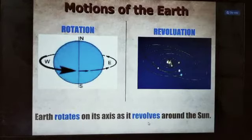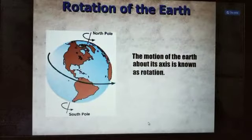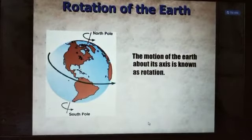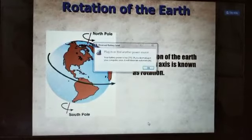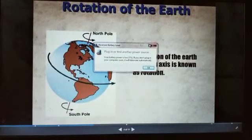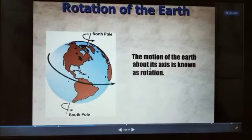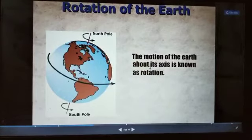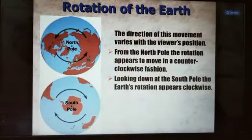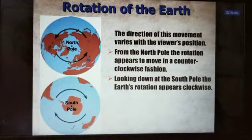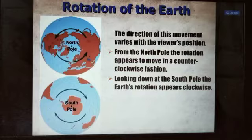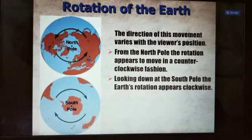Now let's talk about rotation of Earth. The motion of Earth about its own axis is known as rotation. The direction of this movement varies with the viewer position. From the North Pole, the rotation appears to move counterclockwise. Looking down at the South Pole, it appears clockwise.